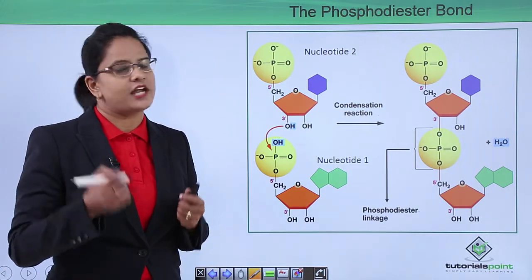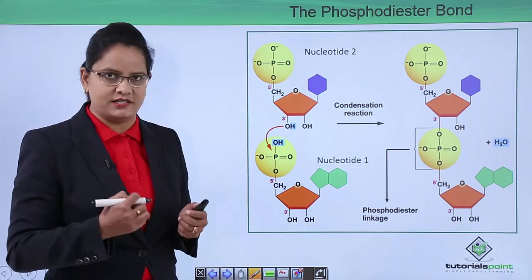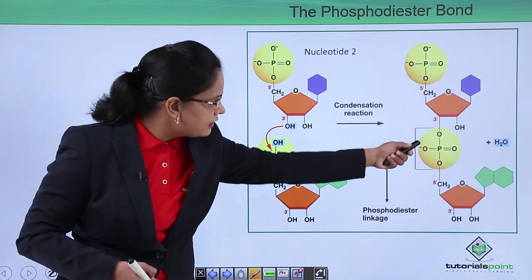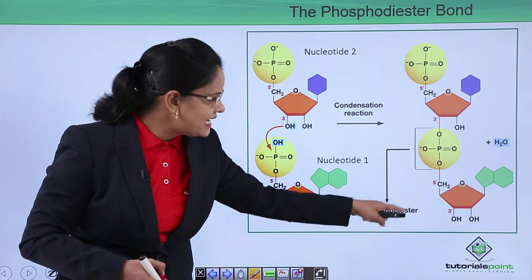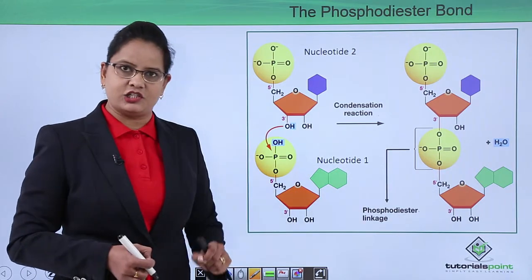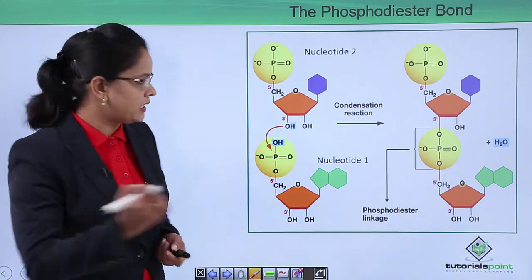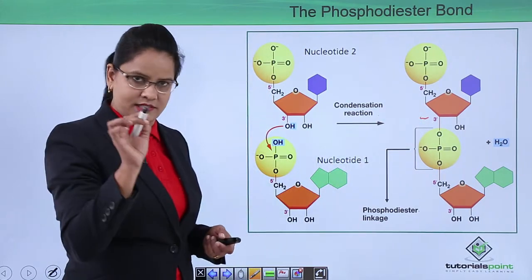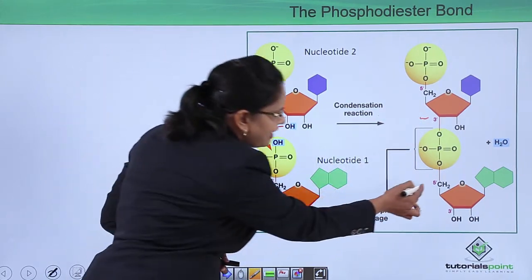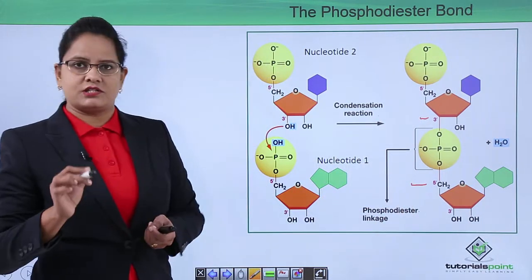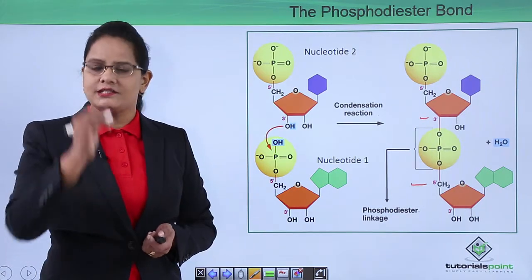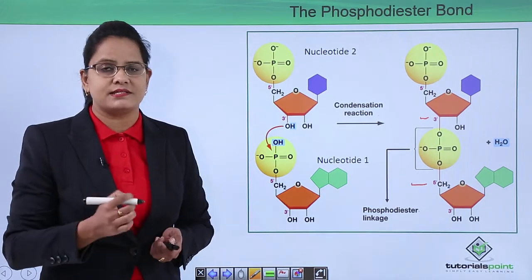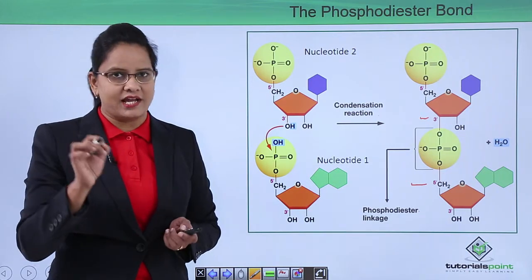A water molecule is removed in this process. Clearly you can see a phosphodiester linkage is formed — 'phosphodiester' because one phosphate group is joined to the three prime hydroxyl and to a five prime hydroxyl. So two nucleotides are joined together by two ester bonds, and that is the reason it is called a phosphodiester bond.